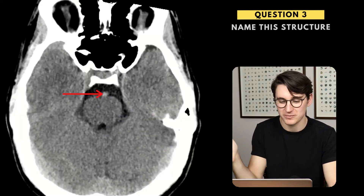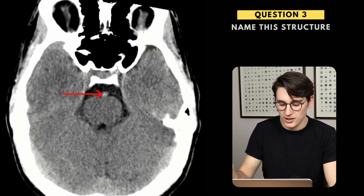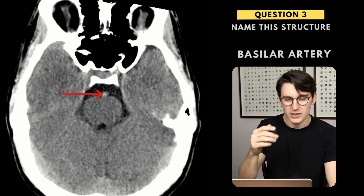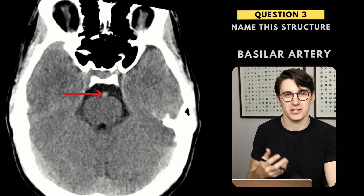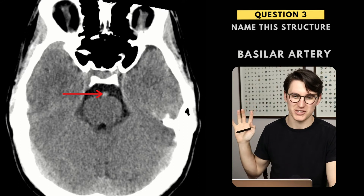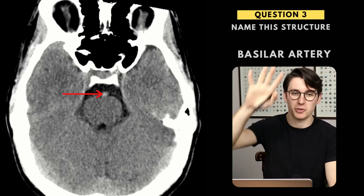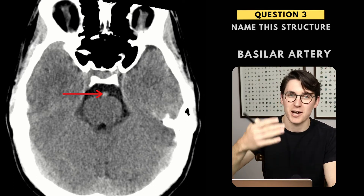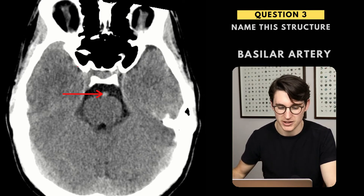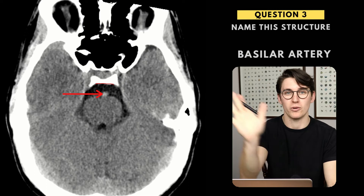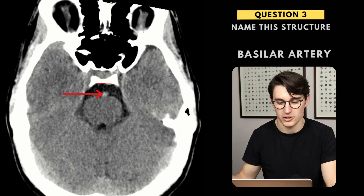Question three, asked to label this structure. This is in fact the basilar artery. The basilar artery runs anterior to the midbrain. Some people find it hard to picture it coming from the vertebral arteries, which seem quite posterior, yet managing to be anterior to the midbrain. It runs up the surface of the clivus, then comes up into our prepontine cistern, heading upward before bifurcating into our posterior cerebral arteries.